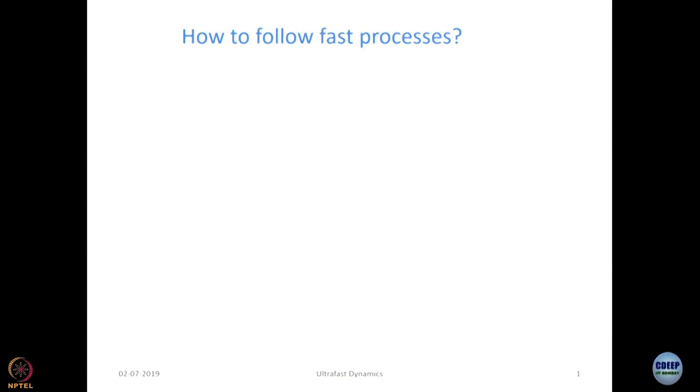Let us come back to the question we had asked in one of the earlier modules. We want to follow fast processes and we know how fast those processes are in chemistry. The fastest process we have learned is expected to take about 170 femtoseconds, and we had shown you some data from Professor Amit Zewail's work where they had actually taken snapshots of a bond breaking. Now suppose we want to do an experiment like that — how do we follow a really fast process? That is what we are going to discuss today, restricting our discussion mainly to electronic levels.